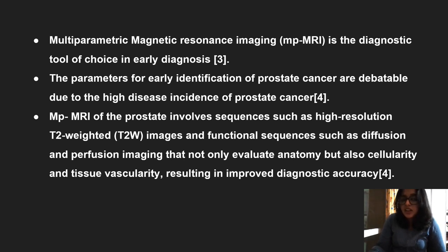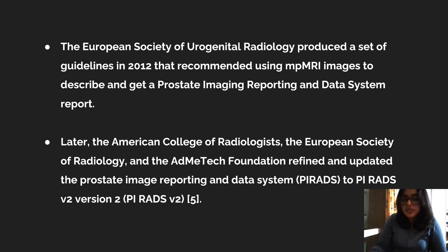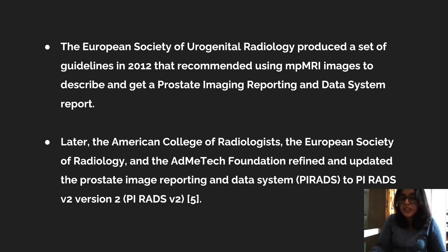Multi-parametric MRI of the prostate involves sequences such as high resolution T2-weighted images and functional sequences such as diffusion and perfusion imaging. This not only evaluates anatomy but also cellularity and tissue vascularity, improving diagnostic accuracy. The European Society of Urogenital Radiology produced guidelines in 2012 recommending multi-parametric MRI for PIRADS reporting. Later, the American College of Radiology, the European Society of Radiology, and the AdMeTec Foundation refined and updated this to PIRADS Version 2.